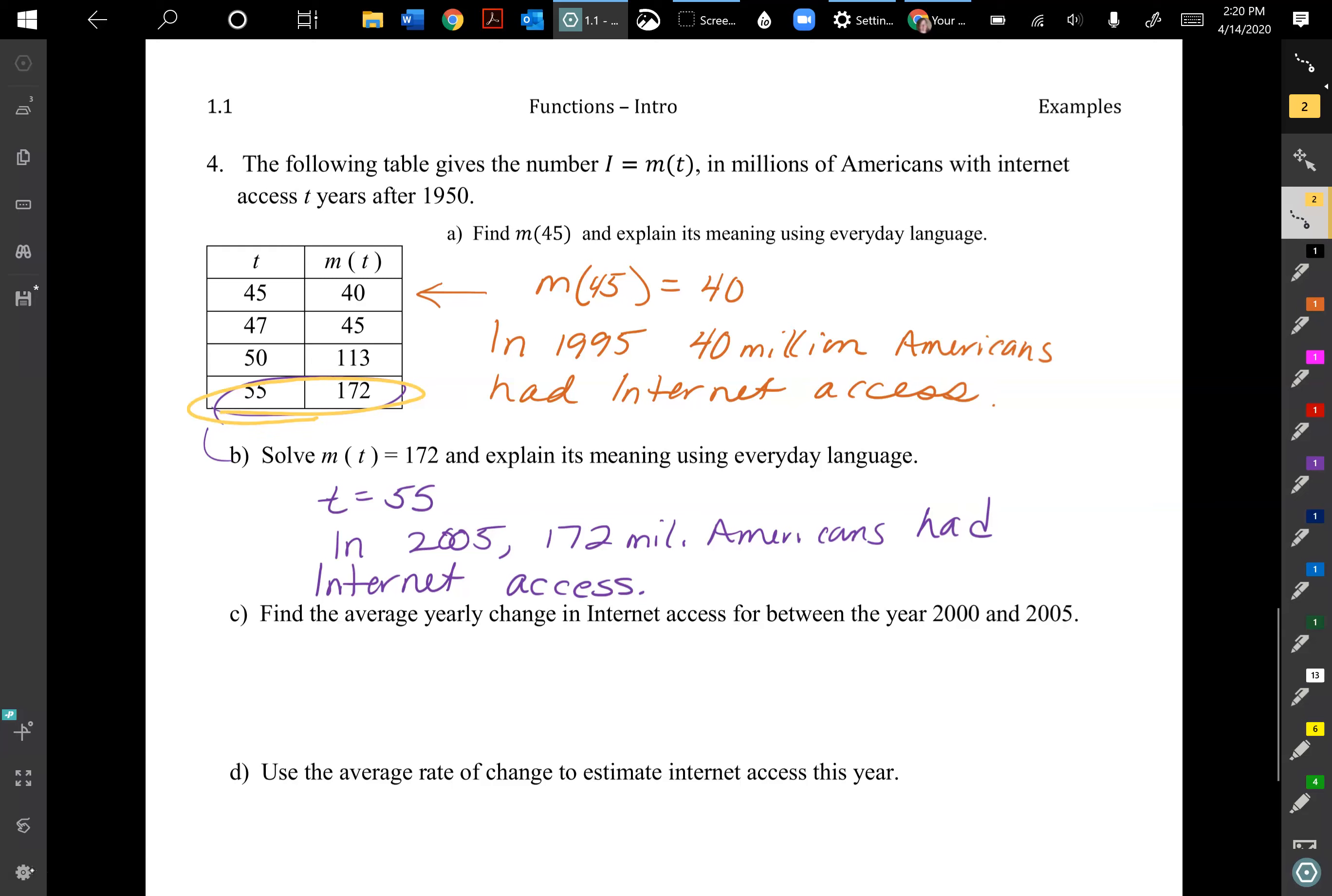Then for part b, I'm looking on the last row there. I found 172 on the right and then looked over to the left to find my t is 55. Add that on to 1950. I get in 2005, 172 million Americans had internet access.